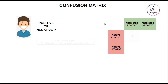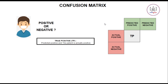Now there is something called true positive. True positive is when your model has predicted positive — that the person is going to test positive — and in actuality the person is also positive. So that is your true positive.